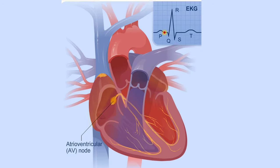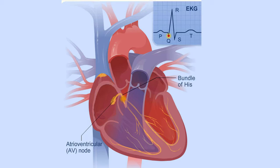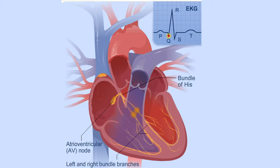The signal is released and moves next to the bundle of HIS, located in your heart's ventricles. From the bundle of HIS, the signal fibers divide into left and right bundle branches, which run through your heart's septum. On the EKG, this is represented by the Q wave.